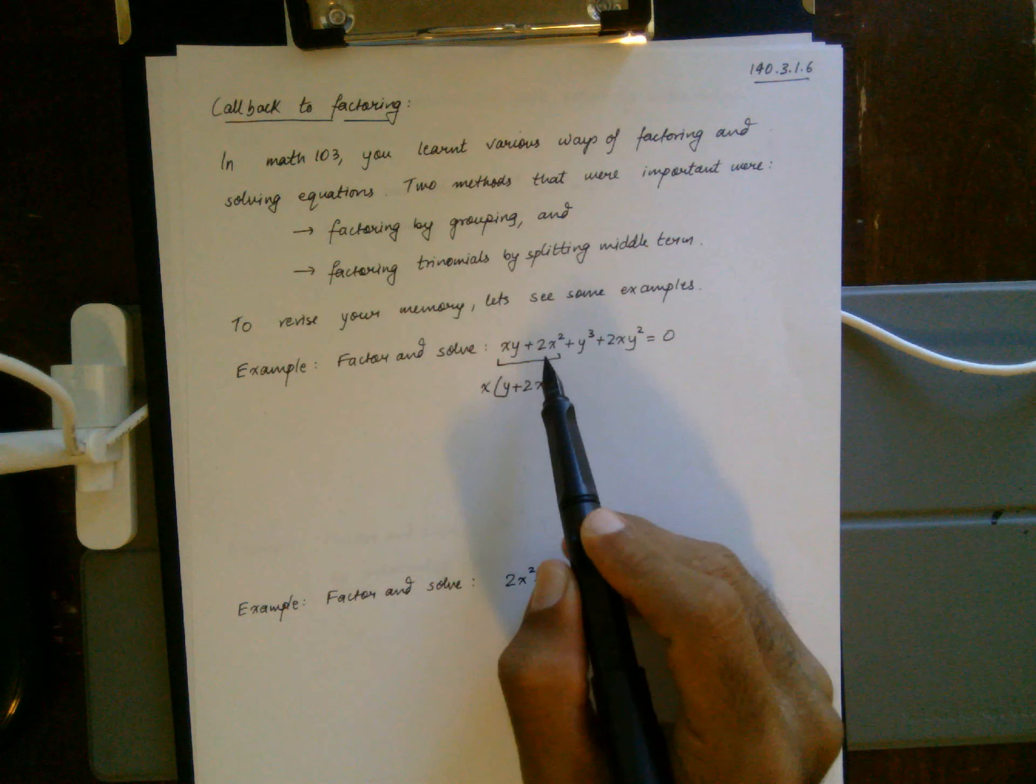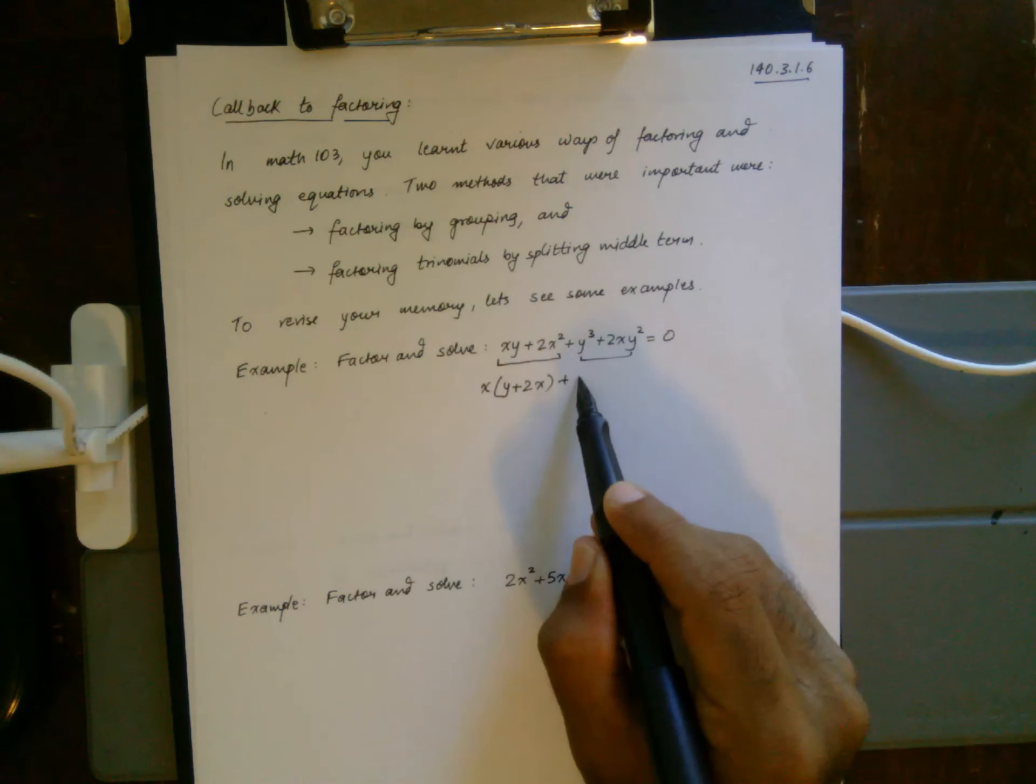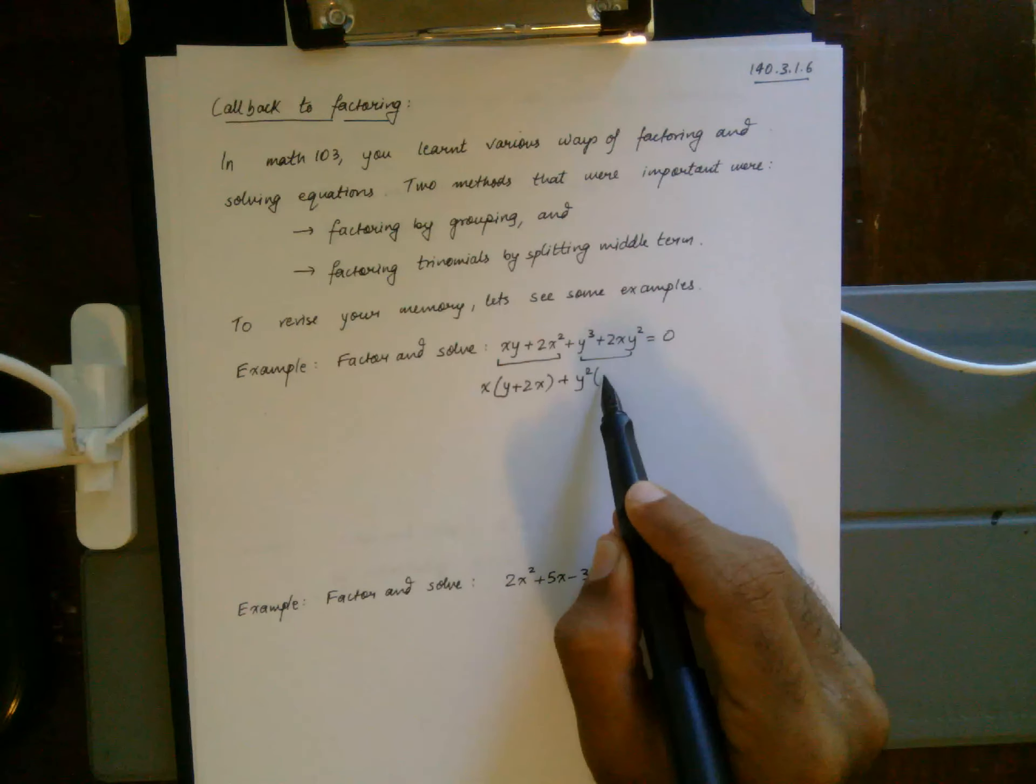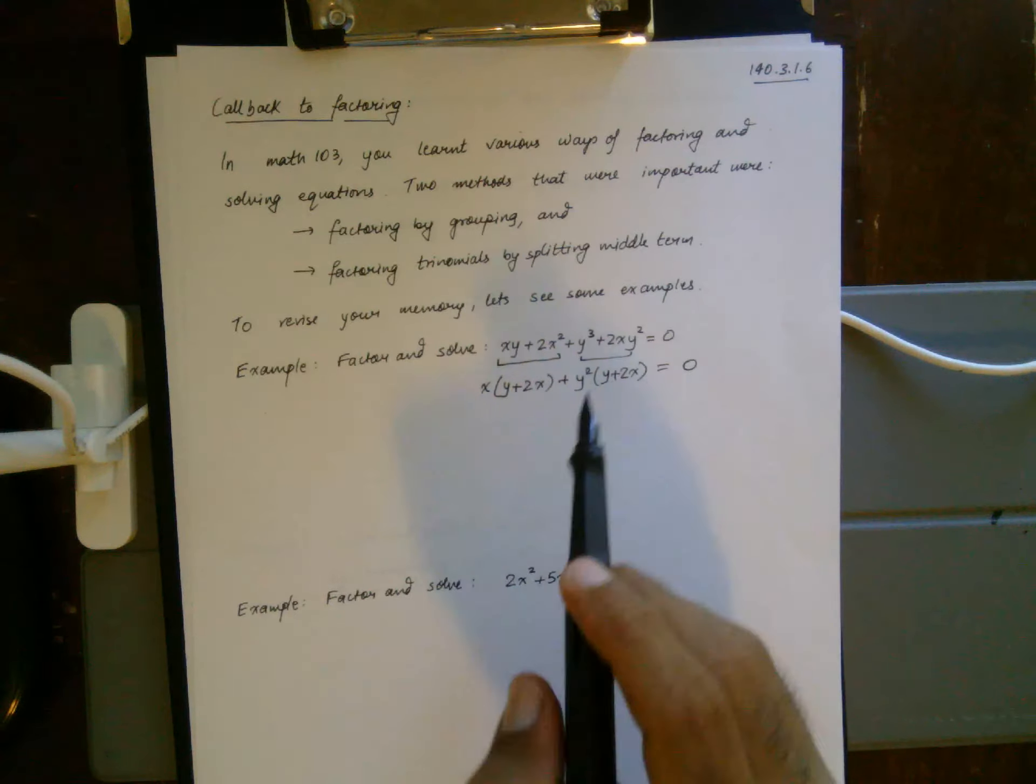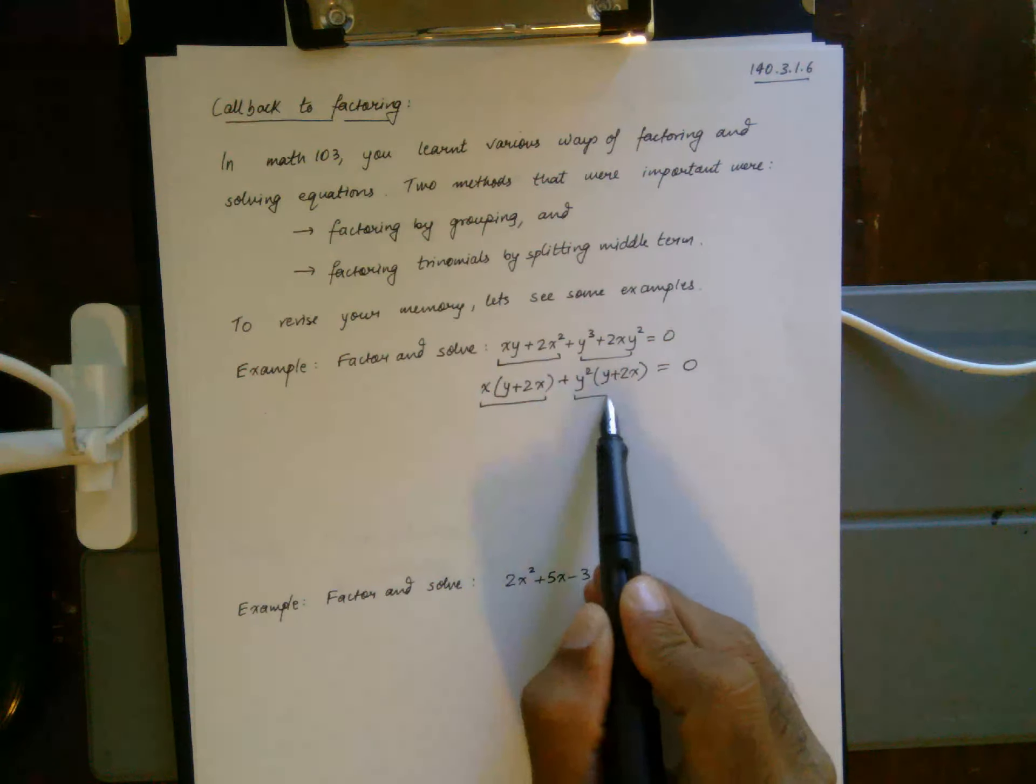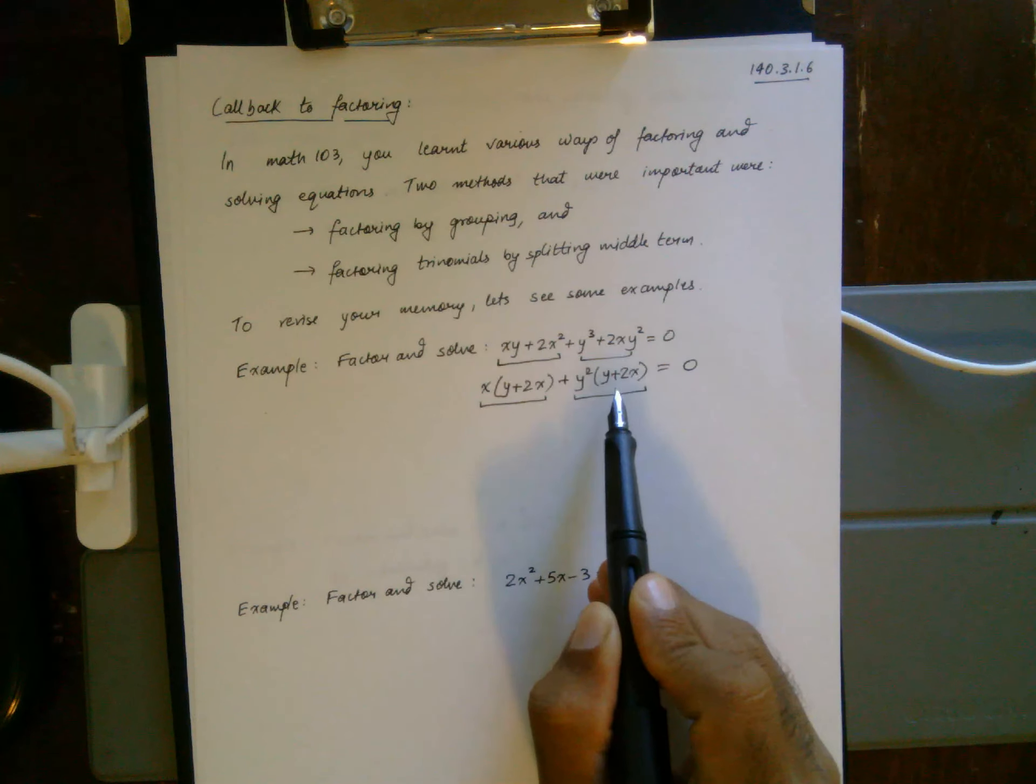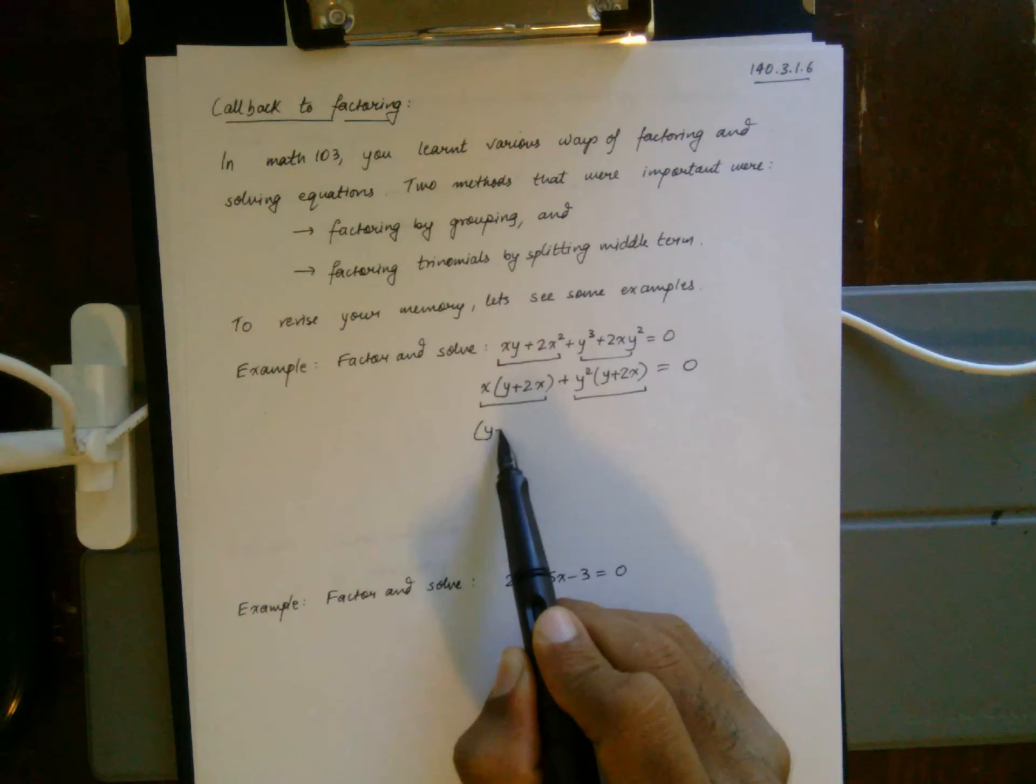Between the next two terms, factor out y², you get y plus 2x equals 0. Now you have two terms, and in both terms you have y plus 2x that is common.